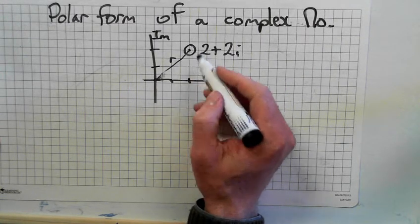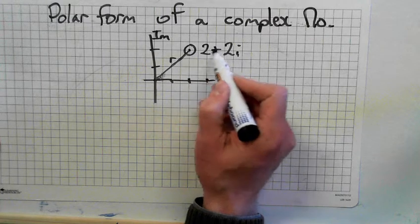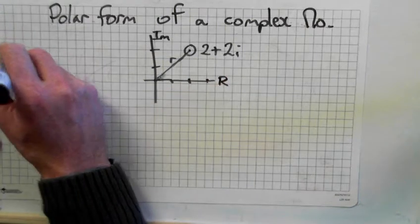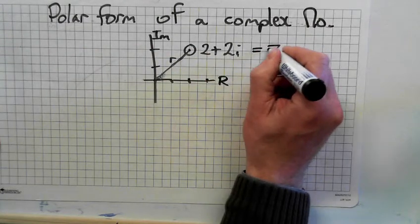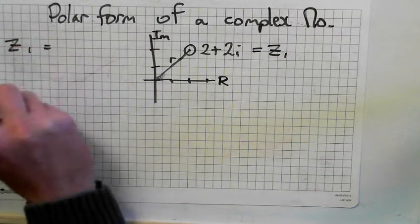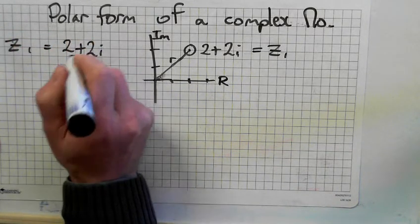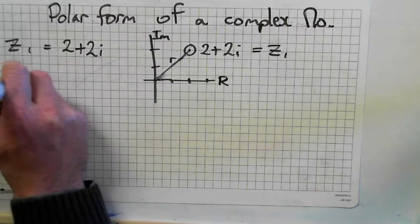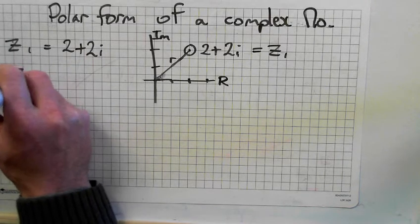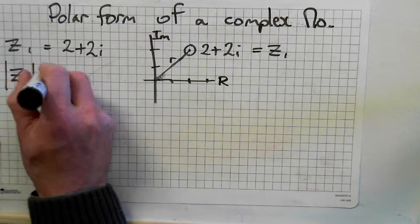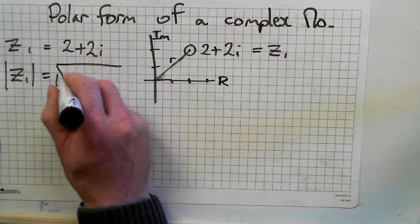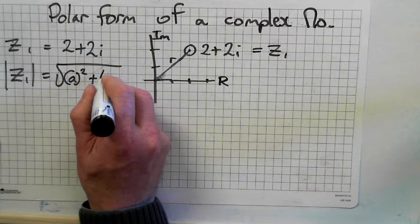So what do you use? You find the modulus of 2 plus 2i. We'll call this Z1. So Z1 is equal to 2 plus 2i. We get the modulus. Z1 modulus is equal to square root of a squared plus b squared.